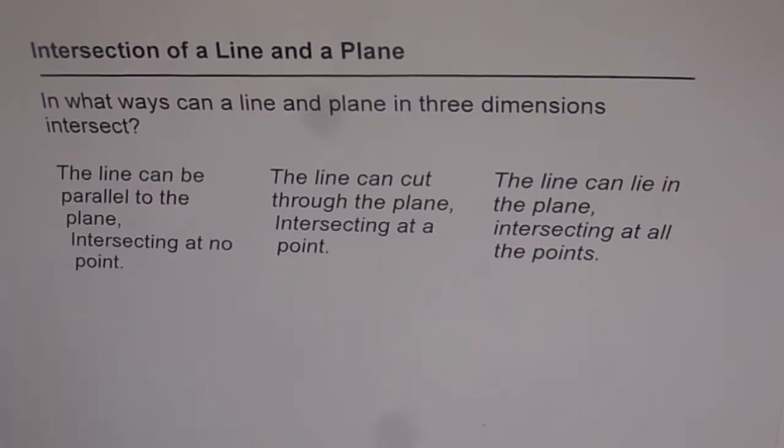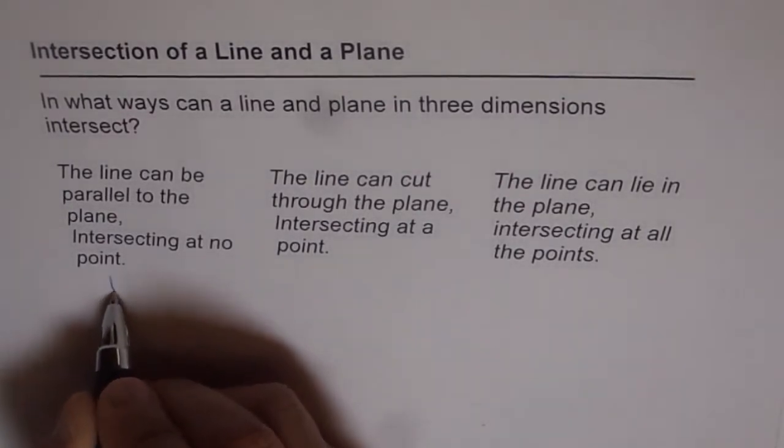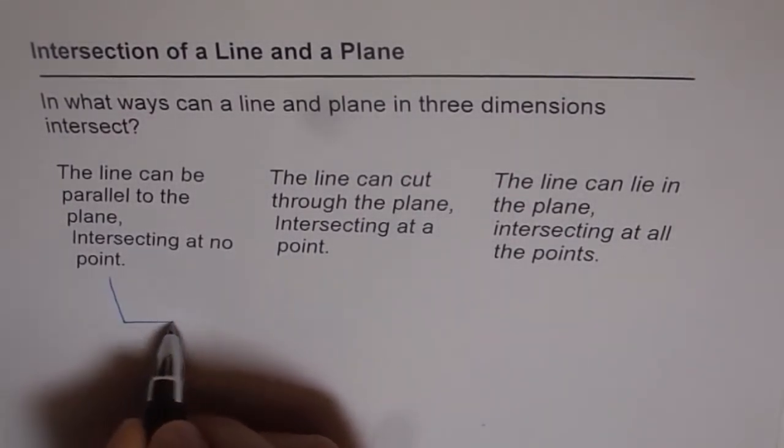In what ways can a line and a plane in three dimensions intersect? There are basically three ways that a line and a plane can intersect. We'll consider all three one by one, and we are considering all this in 3D.